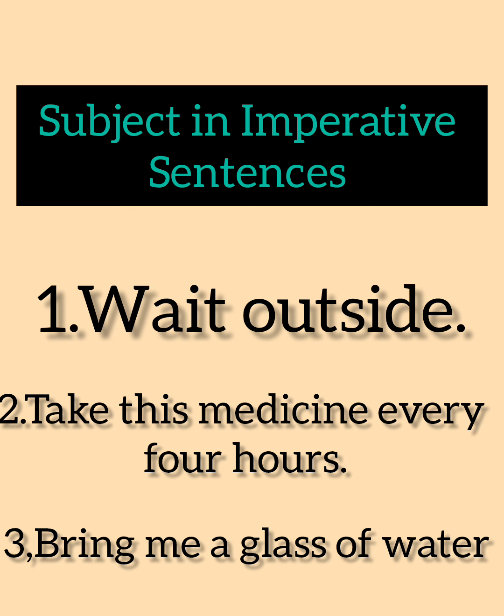Let's see two examples. 'Wait outside.' 'Take this medicine every four hours.' These sentences actually mean 'You must wait outside' and 'You should take this medicine every four hours.' So it is clear that in both sentences, the subject is 'you.'